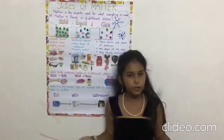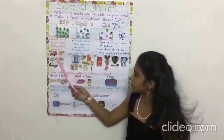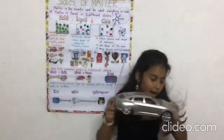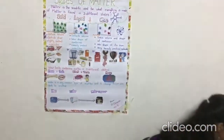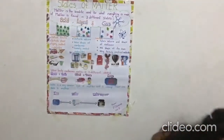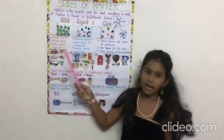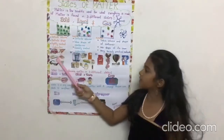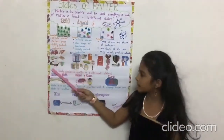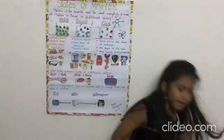Now I am going to tell you some examples for solid: a car, a book, an umbrella, a pencil and an eraser, spectacles, a turbine, and a ball.